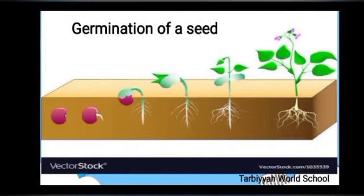You can see the germination of a seed. We sow our seed in the soil and give it sufficient water, air and sunlight. It grows into a new plant, then becomes a flower, and then it will become a fruit. This process is called germination of a seed.